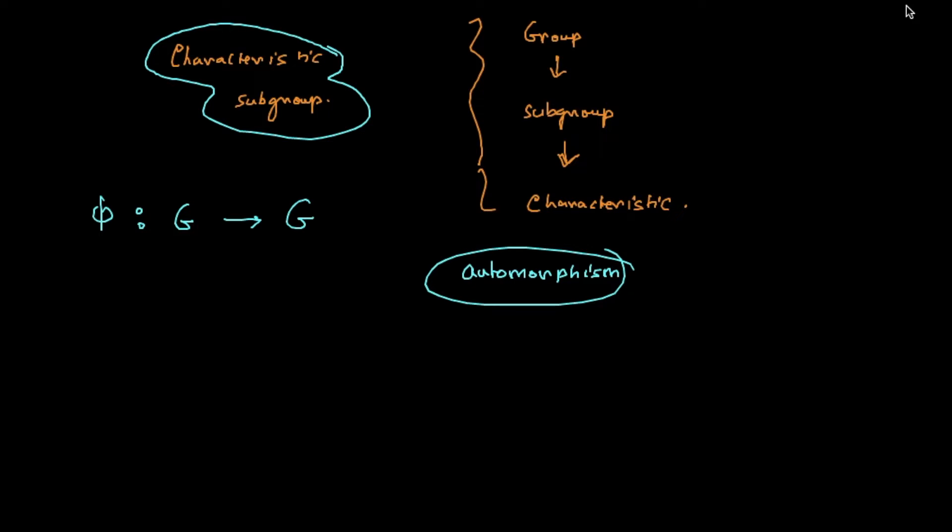What it does is it moves around the points in G. Any map from a set to itself, if it's doing something, will at least move around some of the points in the set. Let me give you an example.